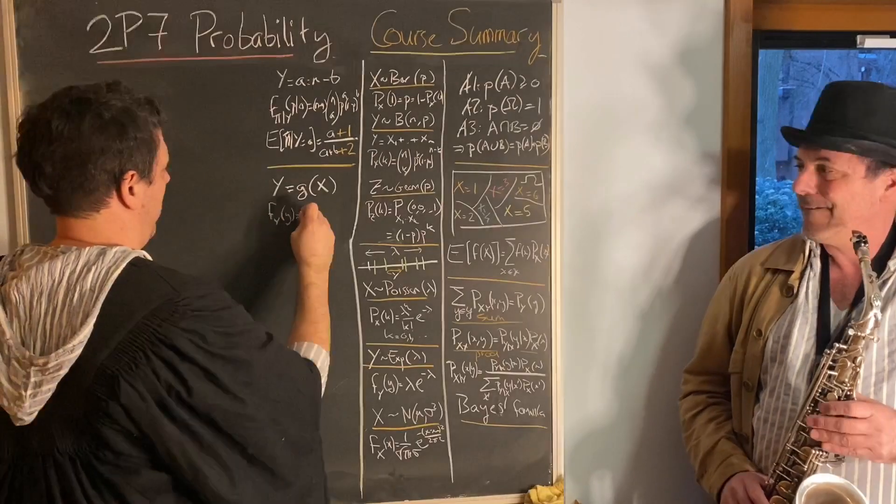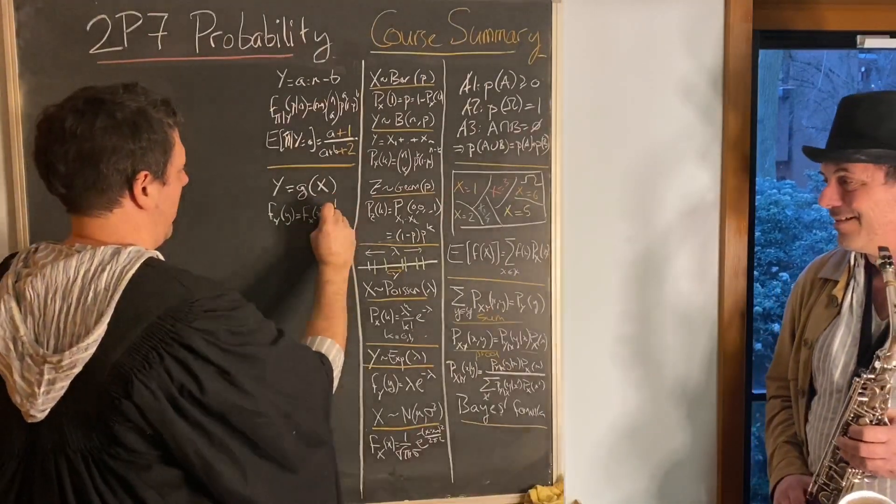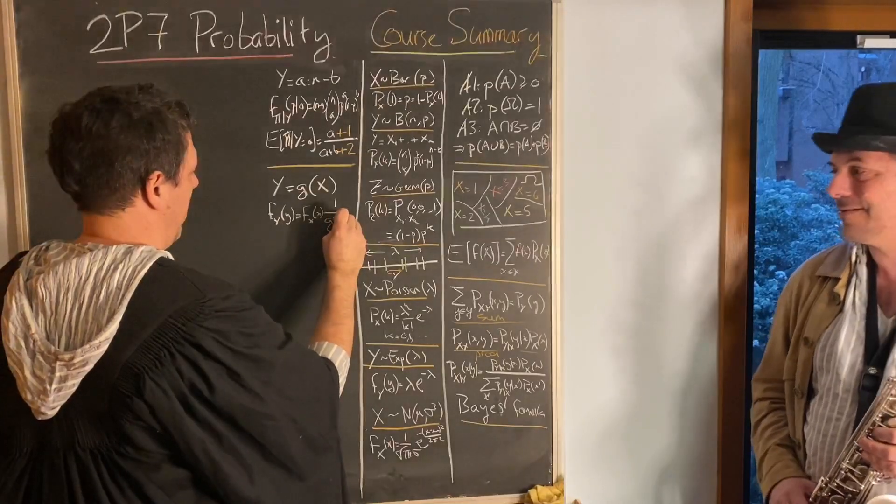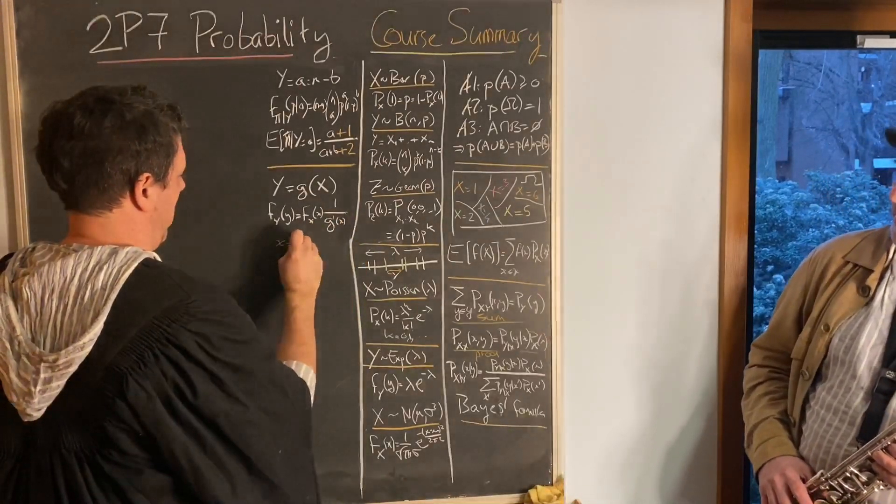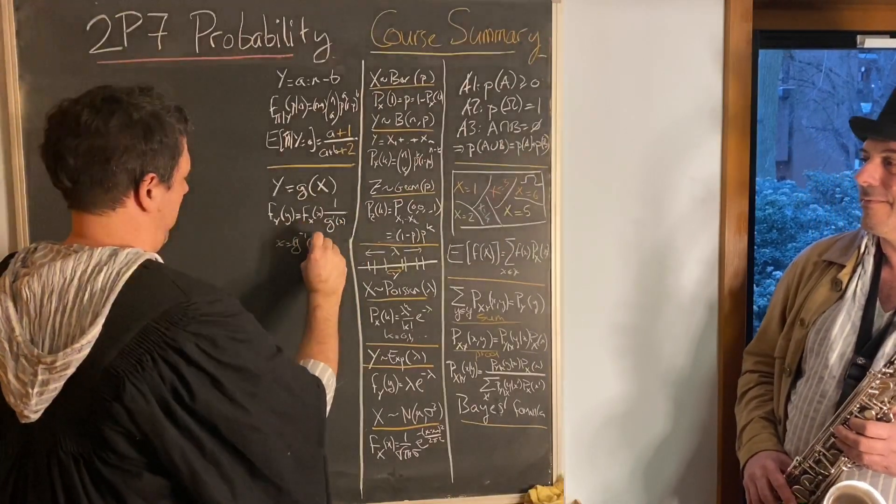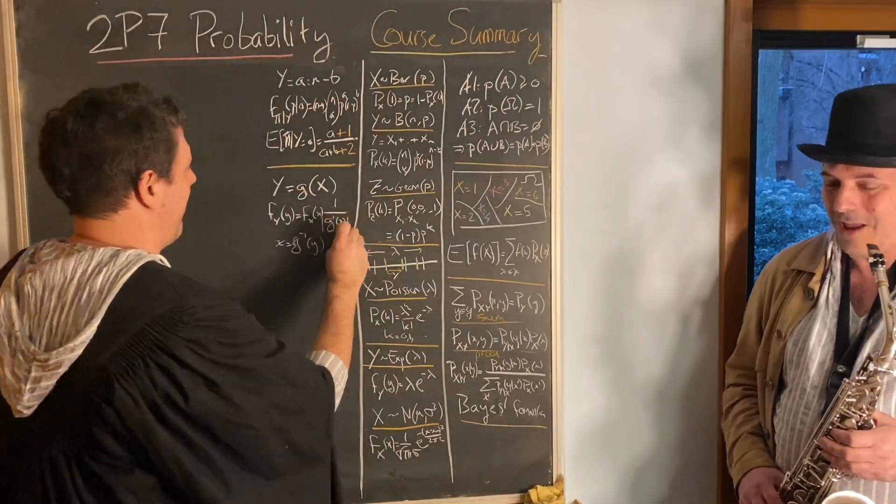To get a function's density, divide by its derivative, and if it's minus, make it plus.